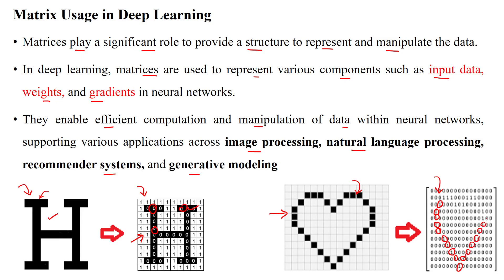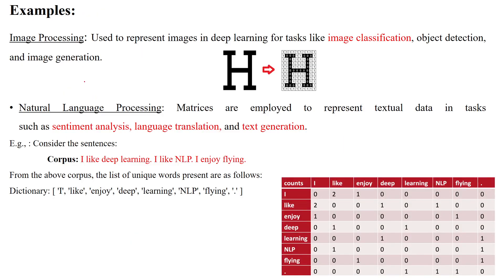By using this kind of representation with matrix help, we can express the image in the form of binary digits or any numbers. Image processing uses different applications like classification, object detection, and image generation using the matrix.